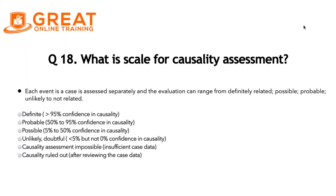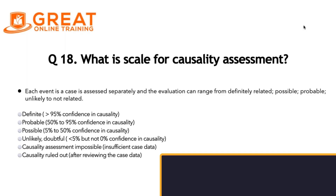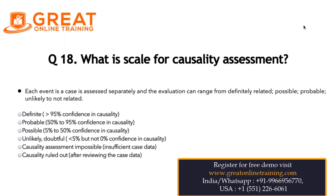If the causality percentage is less than 5% but not 0% confidence, then we consider that event as unlikely related.